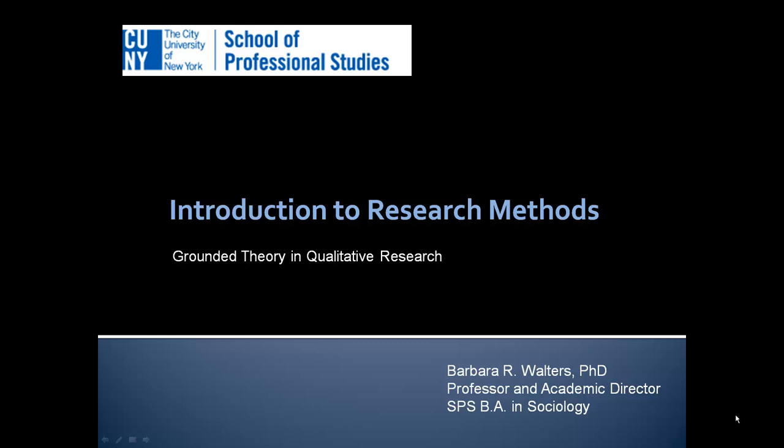The very famous article on Grounded Theory Research by Corbin and Strauss may be a bit too specialized and difficult at this early stage of your development of professional research methods, skills, and strategies, but it's a great article and one that you should read and digest as you matriculate through the online BA in Sociology program. It introduces ideas and concepts for qualitative research that you can explore in later research methods and substantive courses.